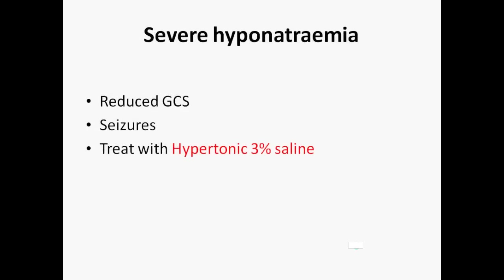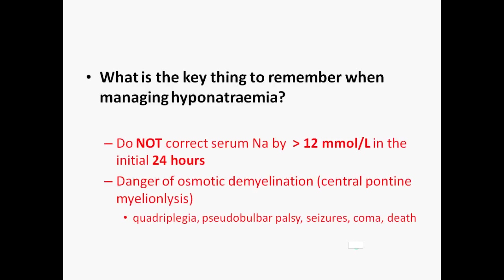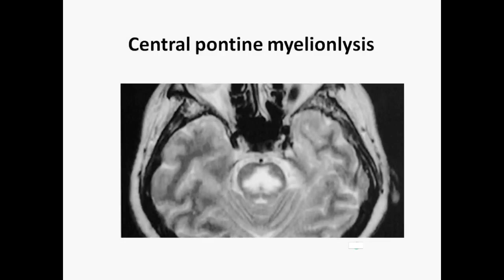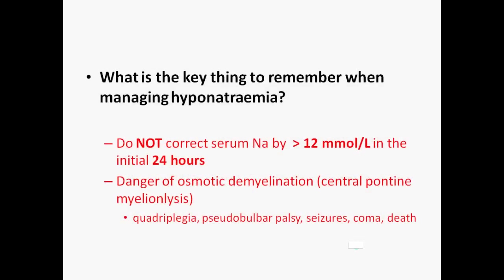Touching on severe hyponatremia — meaning below 120 — the patient will have a reduced GCS and may be fitting. This is a medical emergency, and usually hypertonic saline, 3%, is used to correct the abnormality. Correcting low sodium can be dangerous if brought up too quickly, and it needs to be done in a controlled manner with expert help. The sodium shouldn't be increased by more than 10 millimoles every 24 hours. An increase greater than this could result in central pontine myelinolysis — osmotic demyelination syndrome — resulting in clinical features such as pseudobulbar palsy and quadriplegia, which may eventually result in coma and death.